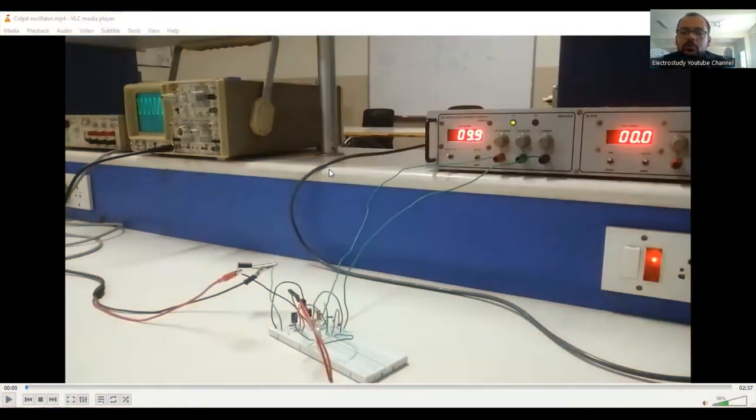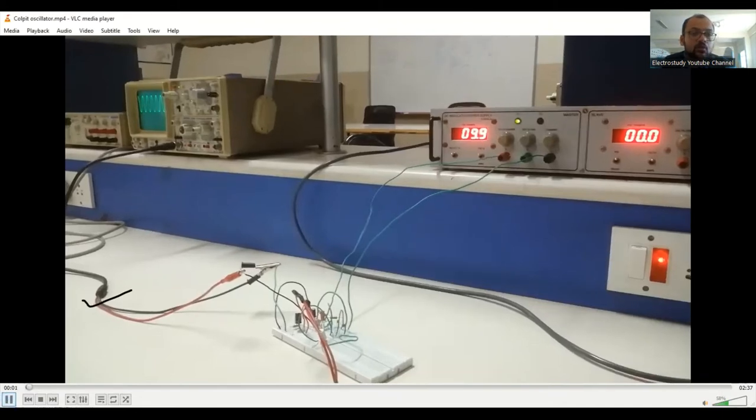Now, we would like to show you the demonstration of Colpit oscillator. What are the components required? We require the passive components, the display device CRO, RPS, and CRO probe to connect the output from the breadboard to CRO. You can observe very clearly this is the entire setup.